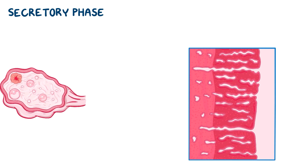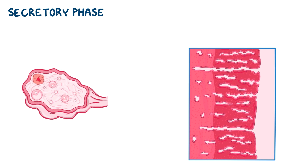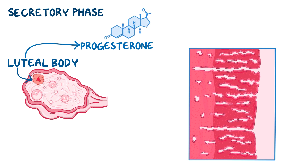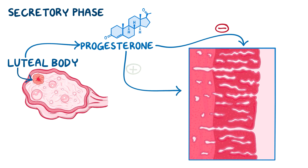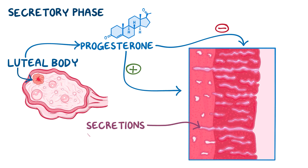During the second phase of the menstrual cycle, also called the secretory phase, the remaining structure of the follicle, now called the luteal body, begins to secrete progesterone. Progesterone counteracts the effect of estrogen on the endometrium by stopping its growth. At the same time, it causes the glands to produce secretions that act as nutrients for any developing embryo.